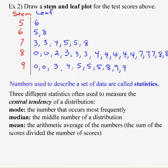The numbers used to describe a set of data are called statistics. Three different statistics are used to measure the central tendency of a distribution. We're trying to find the center of any list of scores. There are three ways to do that. One's the mode, that's the number that occurs most frequently. There's the median, the middle number when arranged in order. You can remember that because when you're driving down a road that has cement in the middle, we call that the median strip. And the mean, this is the arithmetic average where we add all the numbers together and divide by how many there are.